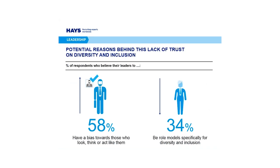Some of the reasons behind this lack of trust may be because over half — 58% — of survey respondents believe that their leaders have a bias towards those who look, think or act like them. And only 34% consider their leaders to be proactive role models for championing greater diversity and inclusion.